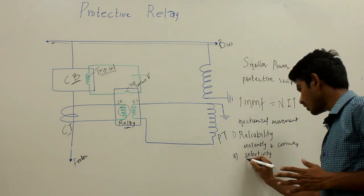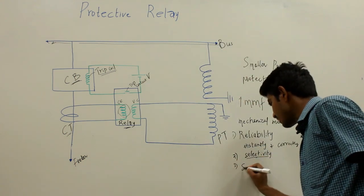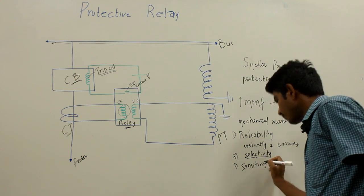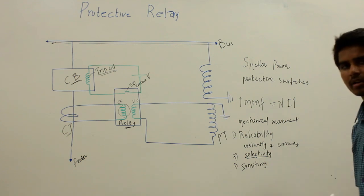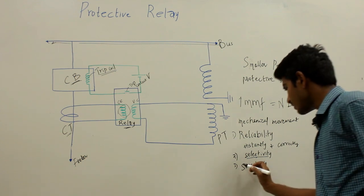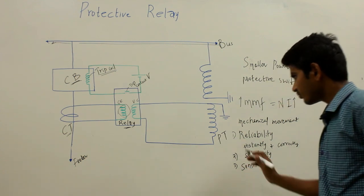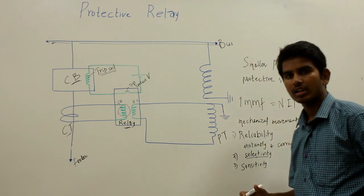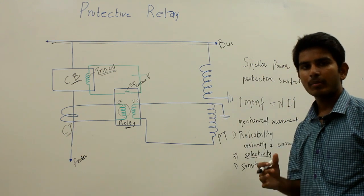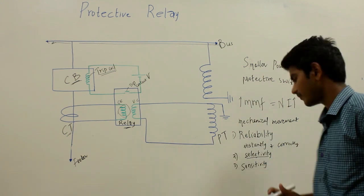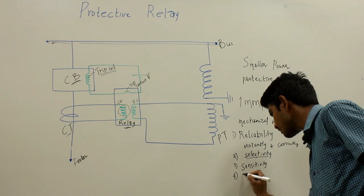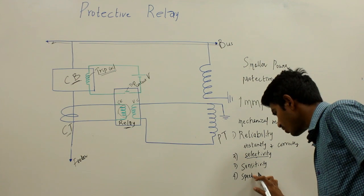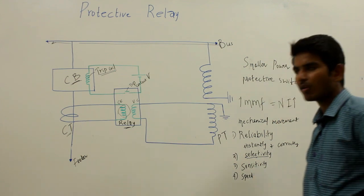The third requirement is sensitivity. Once the fault crosses the predefined limit, the sensitivity of the protective relay should be high enough to sense the fault and reliable enough to isolate the faulty portion. The fourth requirement is speed — the protective relays should respond with the required speed whenever a fault occurs.